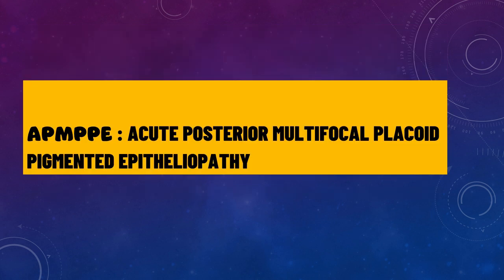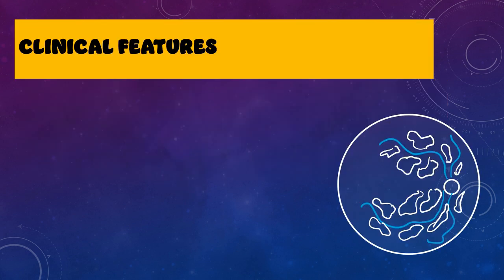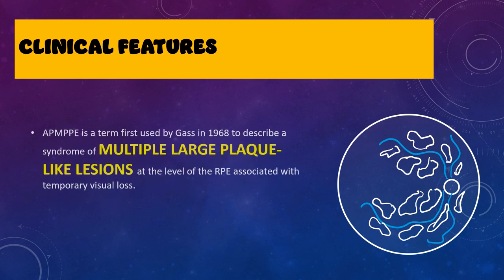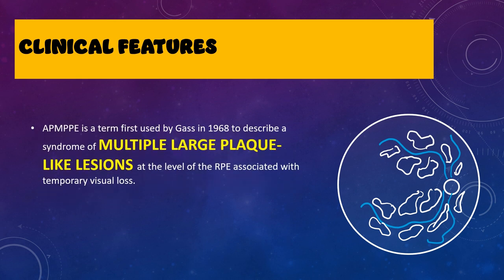The next entity is APMPPE — Acute Posterior Multifocal Placoid Pigment Epitheliopathy. Acute means symptoms are acute; posterior means it involves the posterior segment; multifocal means multiple areas of the retina are involved; placoid refers to placoid lesions; and pigment epitheliopathy means the RPE is affected. This term was coined by Gass in 1968, who described a syndrome of multiple large plaque-like lesions at the level of the RPE.